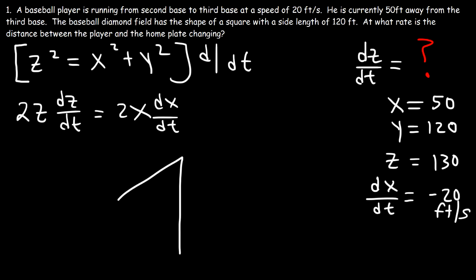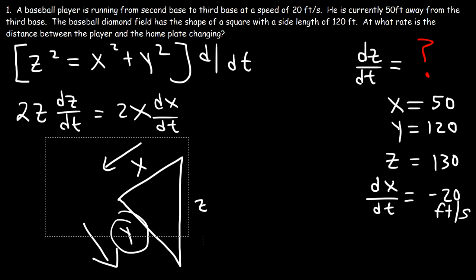So if you recall, in this picture, this is y, this is x, and this is z. The person is moving towards the third base. So therefore, x is changing. But as he's running toward the third base, y is not going to change. It's going to remain 120. And so because y is fixed, it doesn't change, it's a constant at that instant. Until he's moving from third base to home plate, until he's moving in this direction, only then will y be changing. But until then, while he's going from second to third base, y is constant. And so we need to treat it as a constant. And the derivative of a constant is 0.